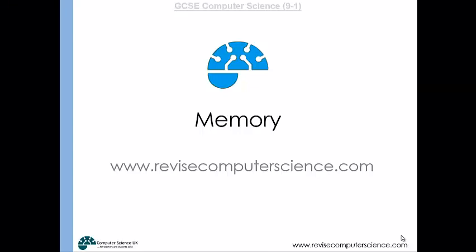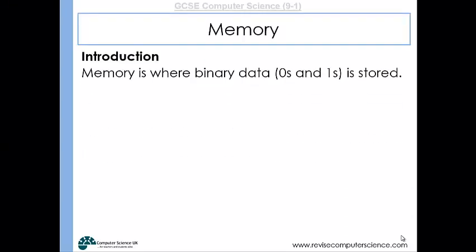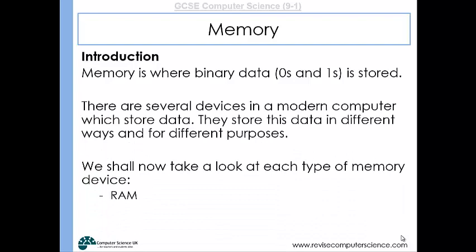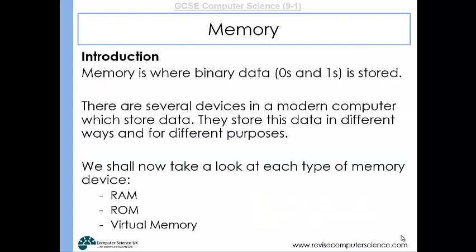In this video we'll have a look at memory. Memory is where data is stored — where zeros and ones are stored. When we're talking about memory in a computer system, we're generally talking about primary memory. Primary memory is any memory device which is directly accessed by the CPU, and that includes RAM, ROM, virtual memory, and also cache.